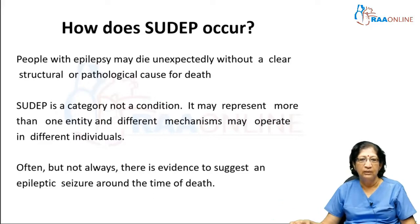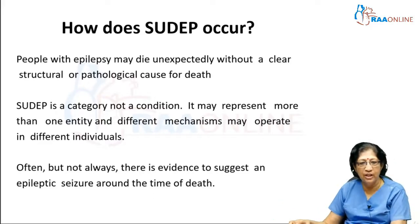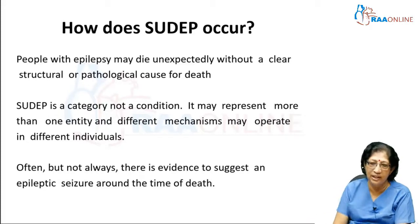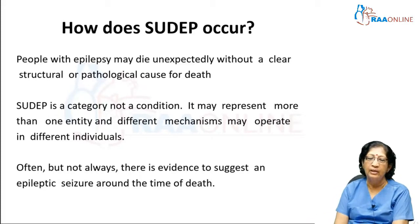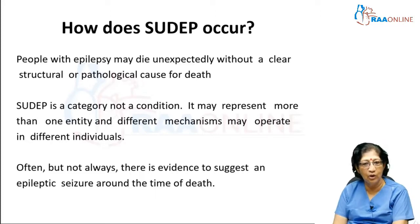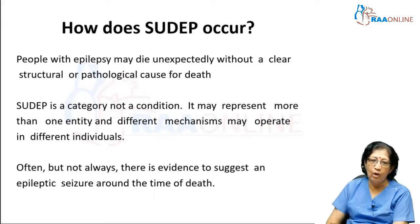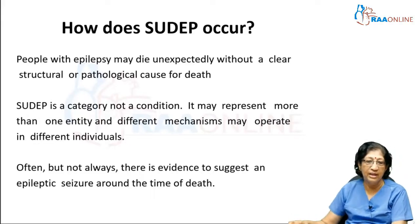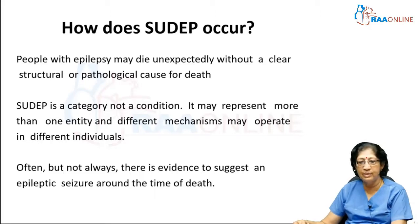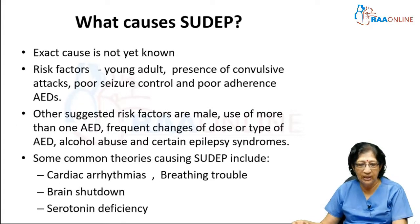How does this occur? Epilepsy can produce changes in the cardiac as well as the respiratory system, apart from the brain. People with epilepsy may die unexpectedly without a clear structural or pathological cause; SUDEP is not a category, it is just a condition. It represents many mechanisms which can operate in different individuals, but not always. There is evidence to suggest an epileptic seizure around the time of death — sometimes there may be a suggestion, sometimes there may not be.